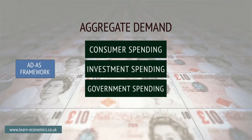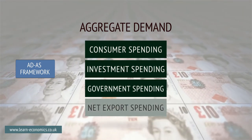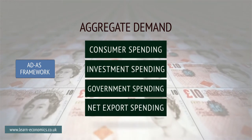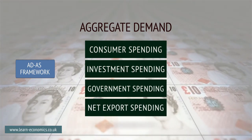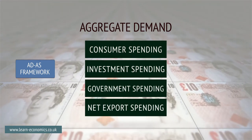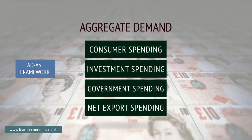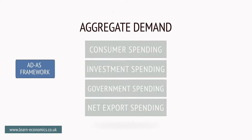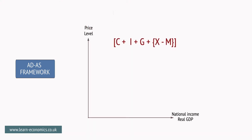Aggregate Demand also includes spending by overseas consumers and firms on an economy's goods and services, such as when US citizens buy UK-produced computer games. Household consumption is the most important component of Aggregate Demand, making up around 65% of national income in most advanced economies.